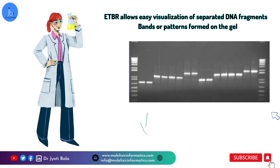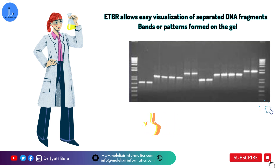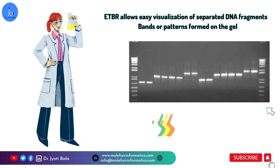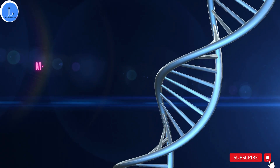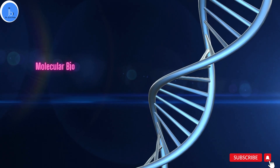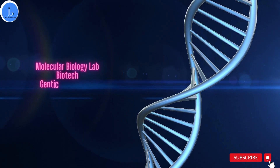This fluorescence enables researchers to observe and photograph the DNA fragments as they travel through the gel. Thanks to EtBr, we can easily visualize the separated DNA fragments as distinct bands or patterns on the gel. By comparing the size of these bands to known DNA markers, scientists and researchers can determine the approximate size of the fragments in the sample.